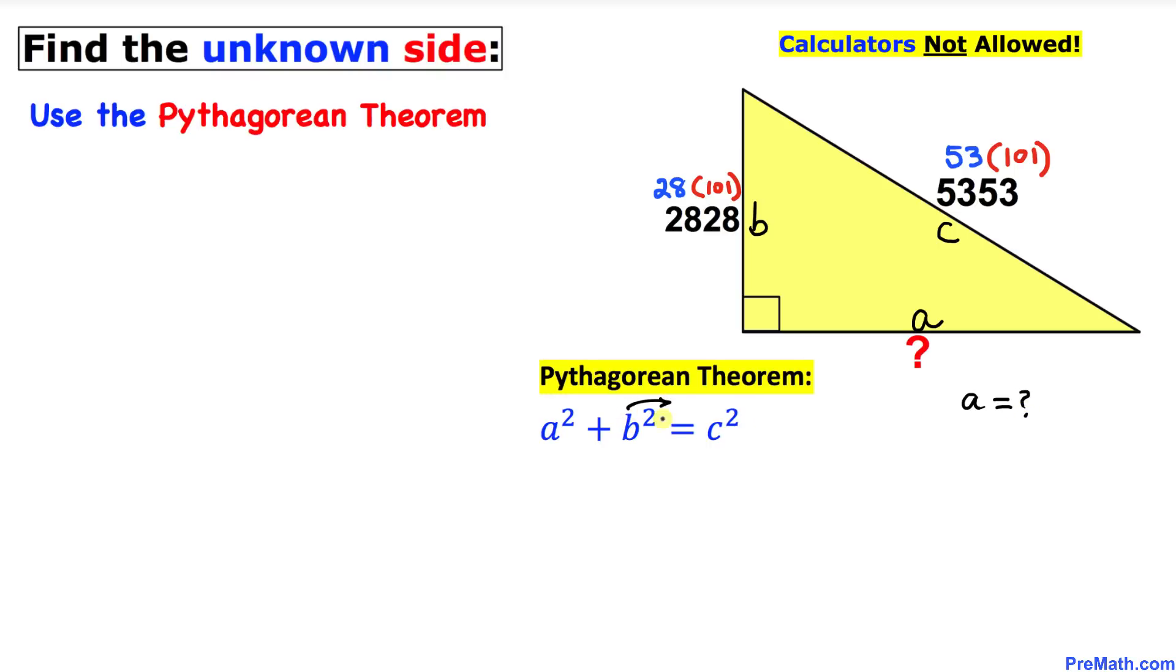Now, since we want to find the value of a, let me go ahead and move this b² on the right-hand side, so a² is going to be equal to c² minus b².